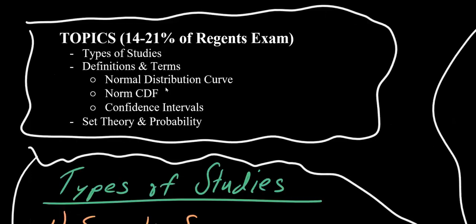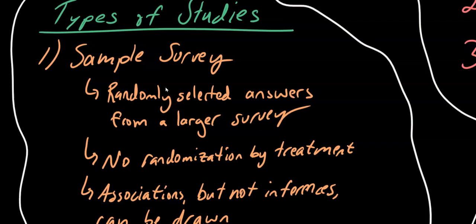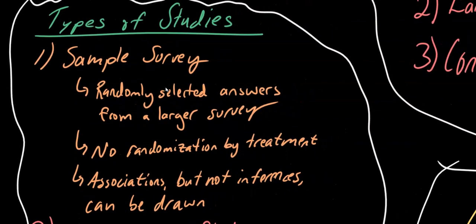We're first going to talk about the types of studies. We have sample surveys, observational studies, and controlled experiments in this course. Sample surveys are like online polls. Experimenters take a randomly selected sample of answers from a larger survey and analyze them. They cannot draw inferences but they can draw generalizations from their results.